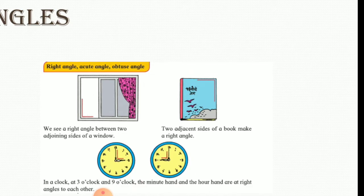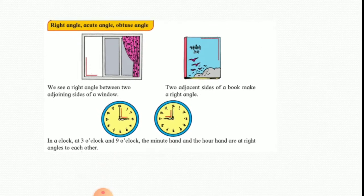As you can see here, we see a right angle between two adjoining sides of a window. Two adjacent sides of a book make a right angle. Now observe the pictures of the clock. In the clock at 3 o'clock and 9 o'clock, the minute hand and the hour hand are at right angles to each other.